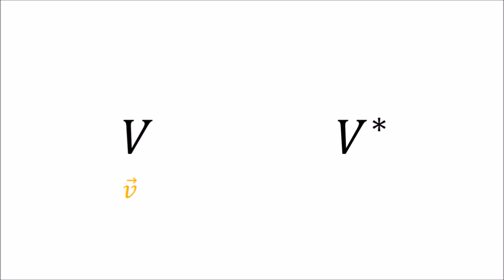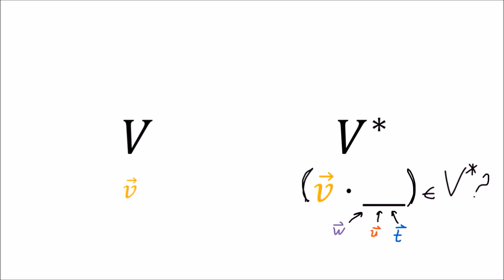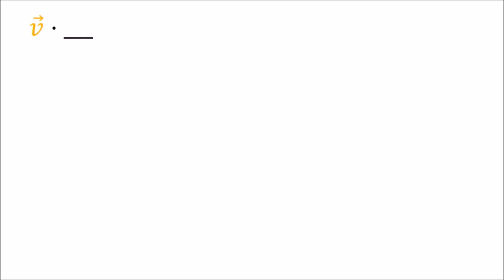We need to try again, this time avoiding the use of a basis altogether. Introducing a basis is what made things ugly in the first place. Here's what I'll propose: we have a vector v in our vector space, and to get its partner co-vector, we introduce the co-vector v dot something, where 'something' is just an input slot for another vector. You might wonder: is this really a member of V star?